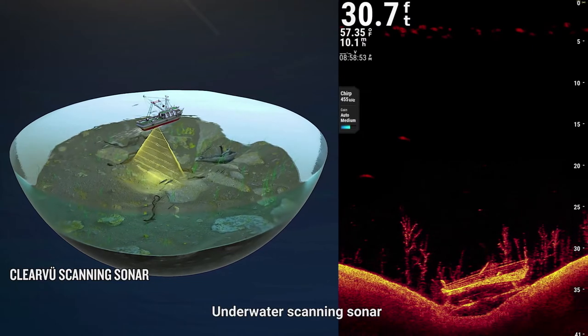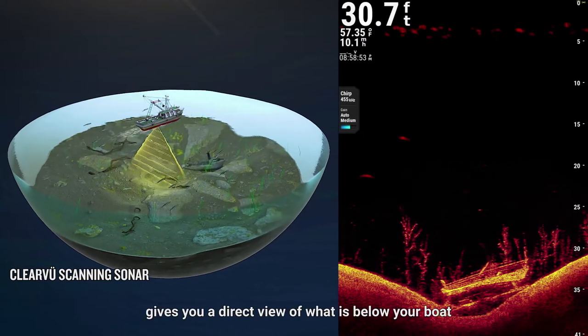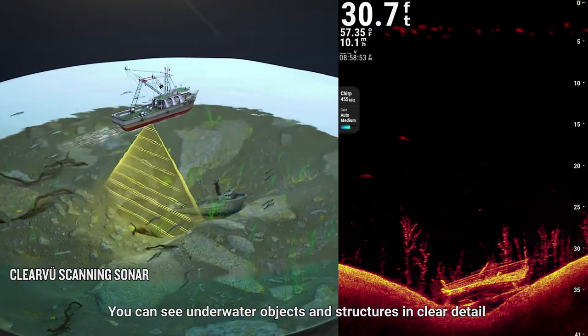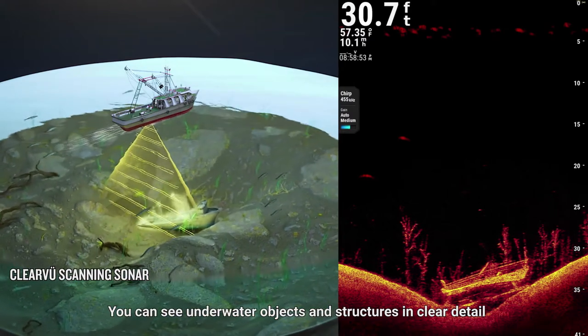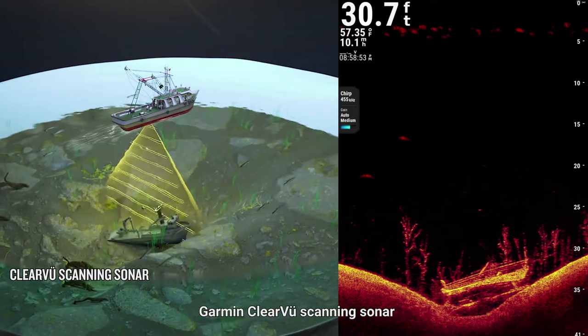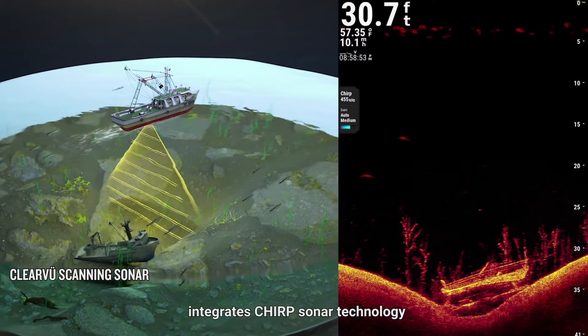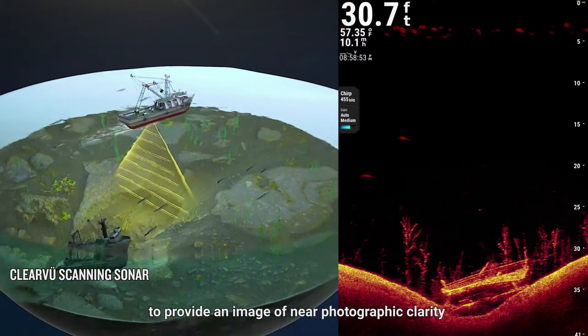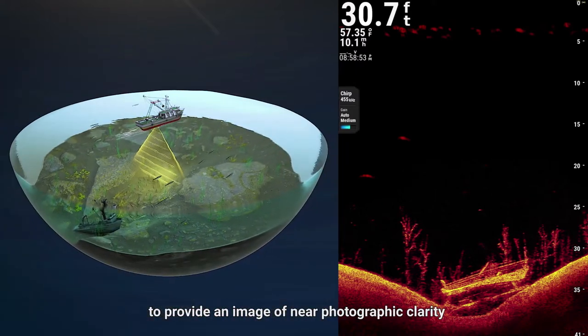Underwater scanning sonar gives you a direct view of what is below your boat. You can see underwater objects and structures in clear detail. Garmin ClearView scanning sonar integrates Chirp sonar technology to provide an image of near photographic clarity.